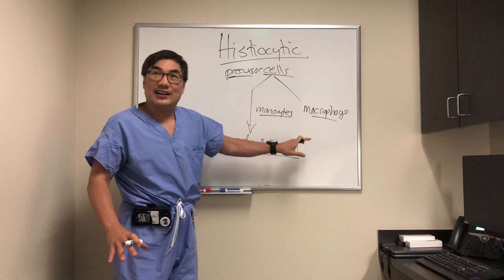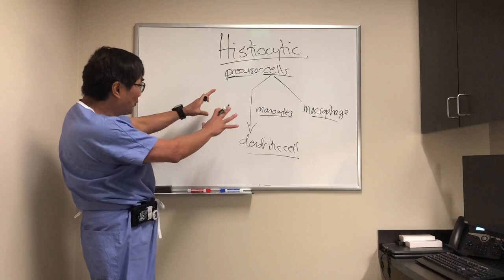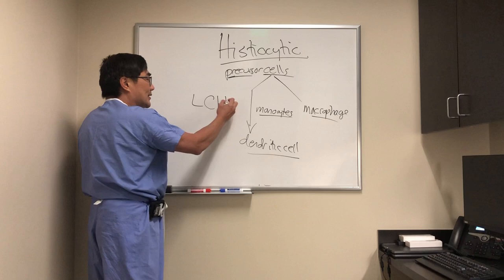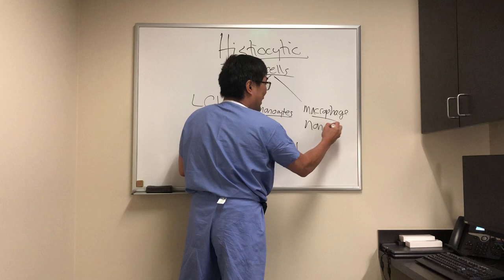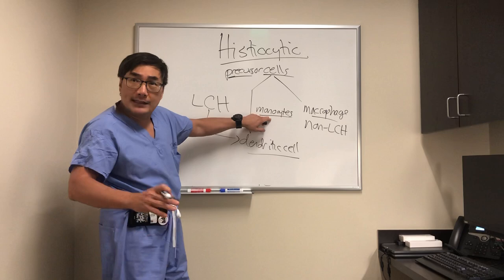These cells are very specialized cells for eating things — that's what 'phage' means. The macrophage is a big eater. We can have tumors derived from these cell types, and they can either be of the Langerhans cell histiocyte type or the non-Langerhans cell histiocyte type.